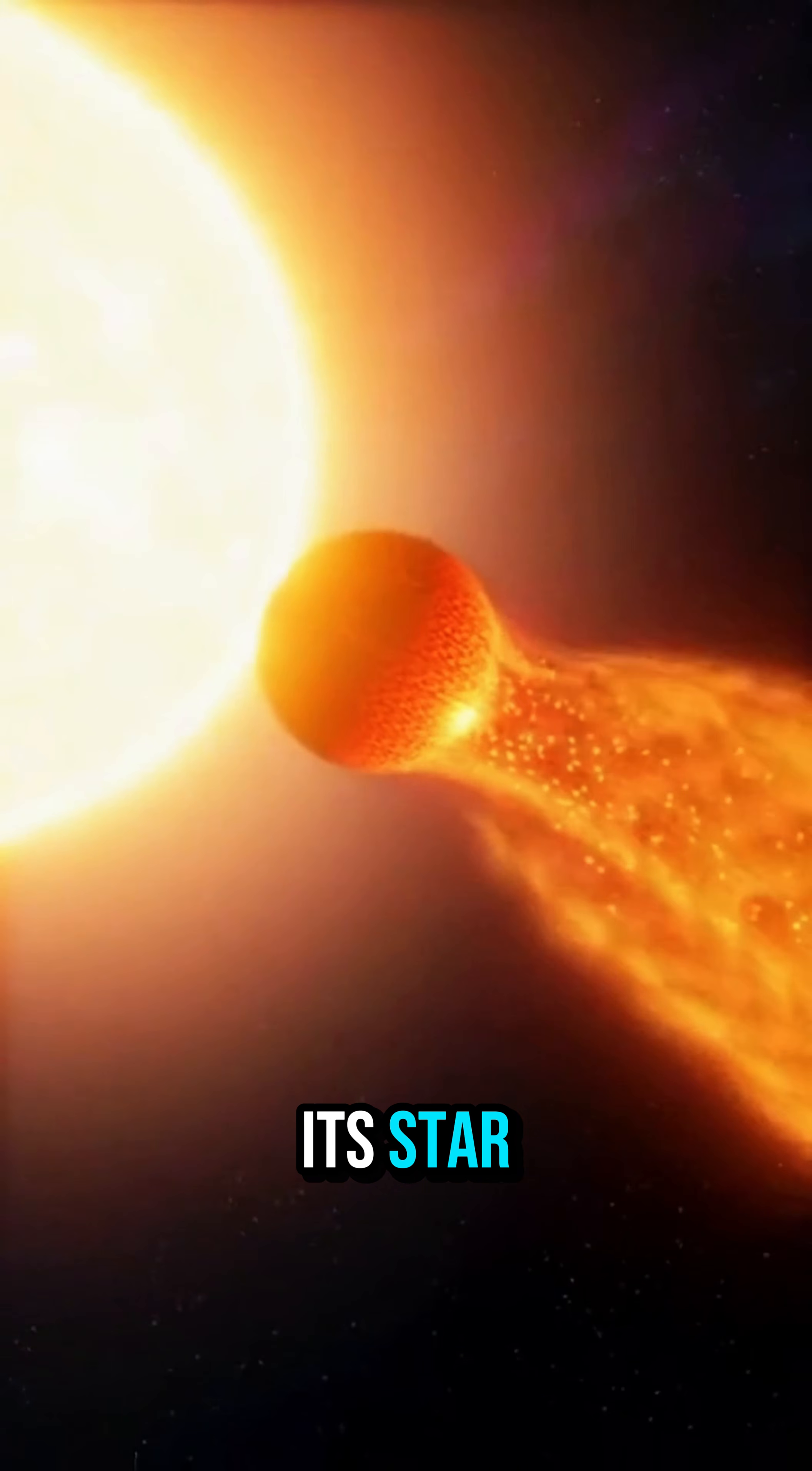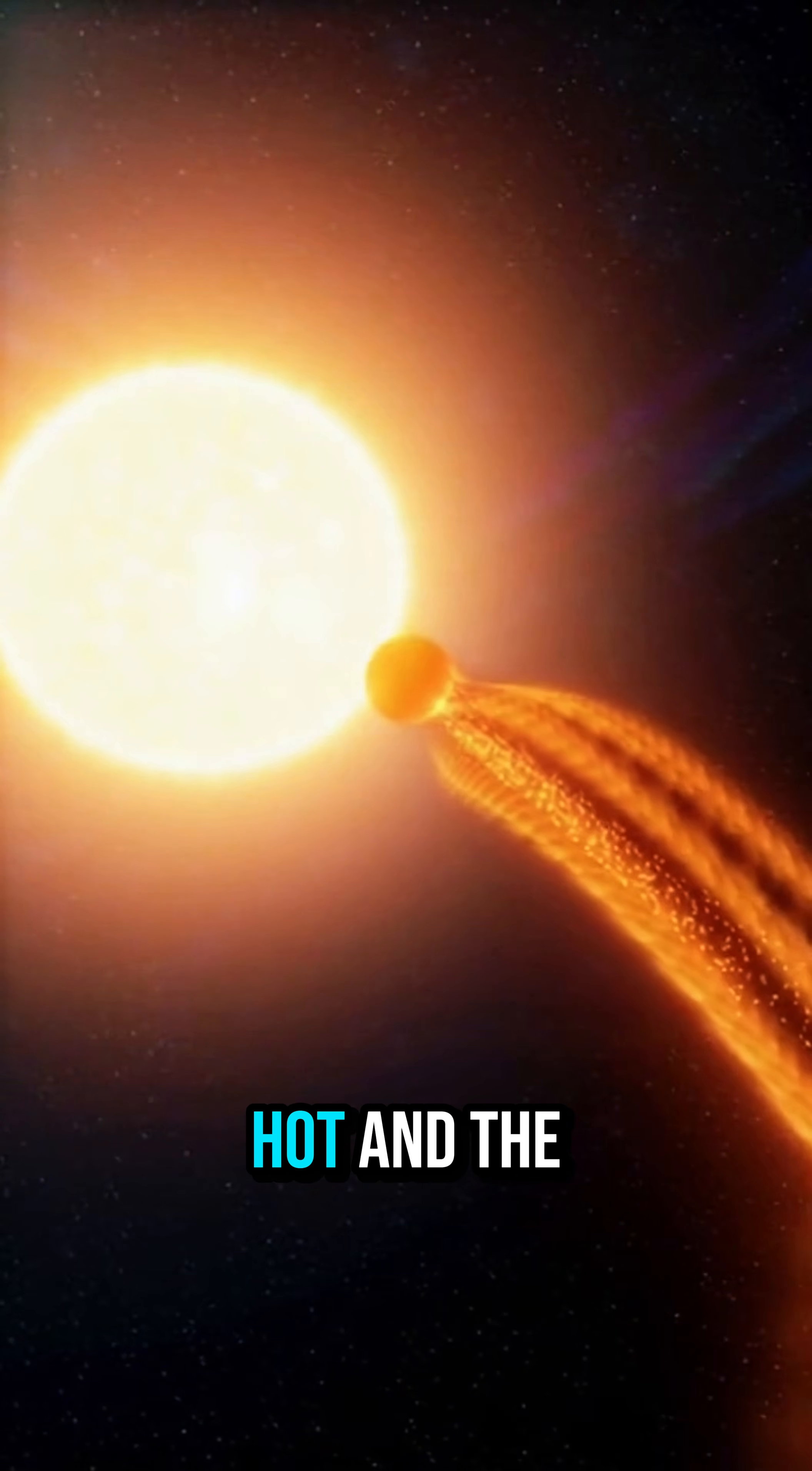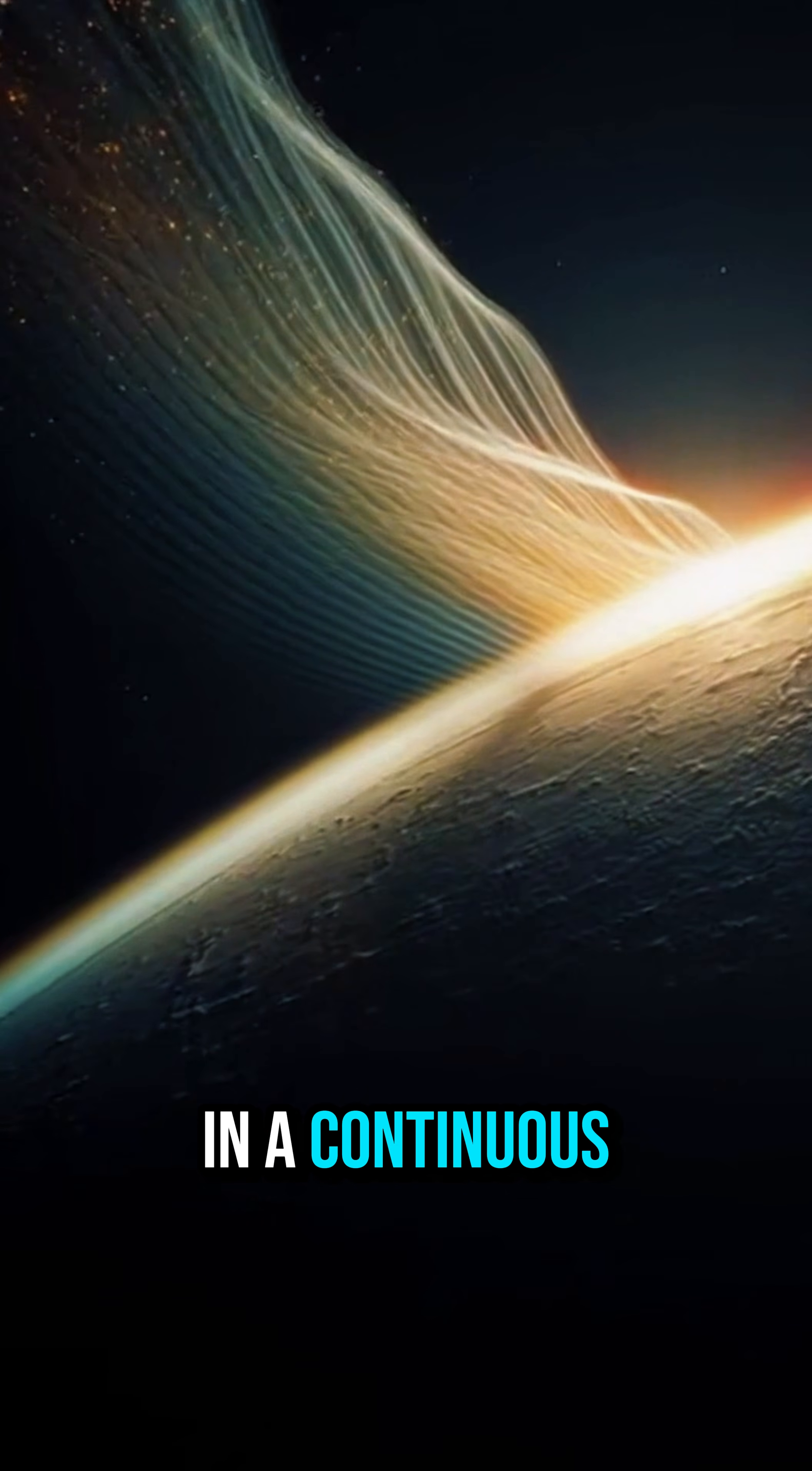There's a planet so close to its star that it's literally boiling into space. On the day side, rock glows red hot, and the upper atmosphere swells into a bright halo, then peels away in a continuous stream.